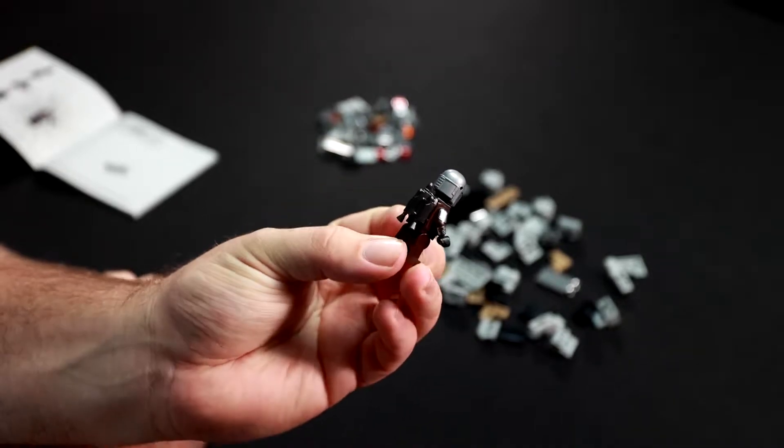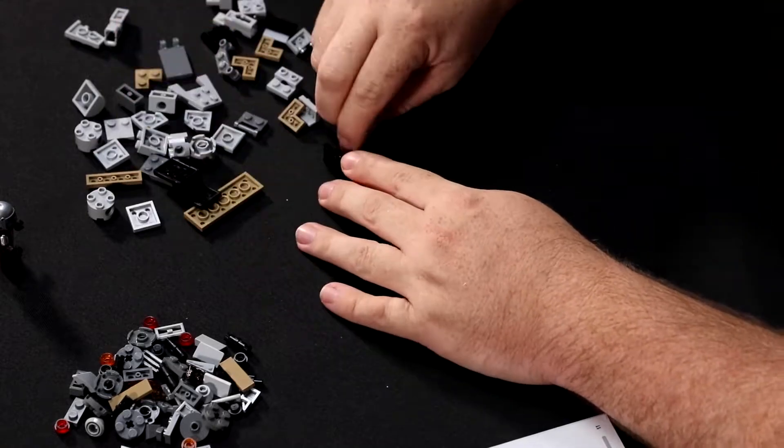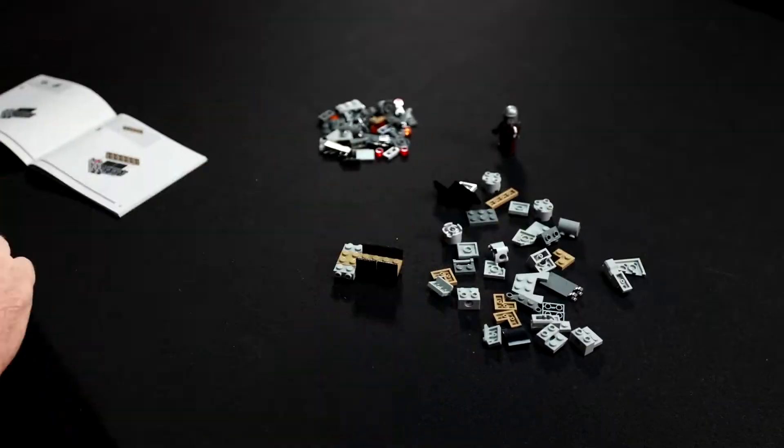So we put the jetpack on the back and now he can fly around. So we're going to start with the base of the Razor Crest and we'll go from there.